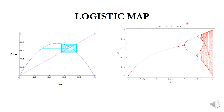The logistic map represents deterministic chaos. For population dynamics, we use the iterative equation: xn equal to r times xn-minus-1 times (1 minus xn-minus-1), where xn represents the population and r represents the control parameter, sometimes called the growth rate or growth factor.